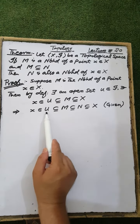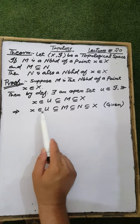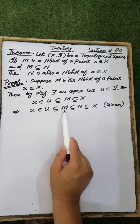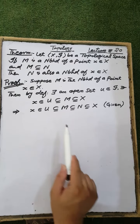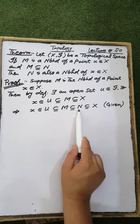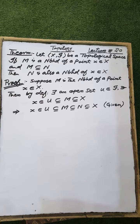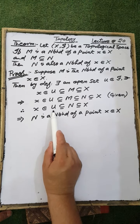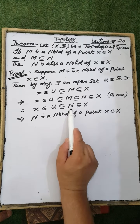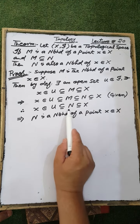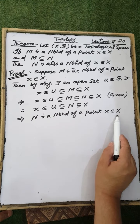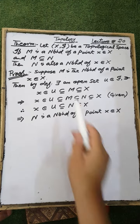This implies that X is contained in the open set U, and U is a subset of M. The open set U is a subset of M, and M is a subset of N according to the hypothesis, where both M and N are subsets of the ground set X. Hence, X belongs to the open set U, and U is a subset of N, which is a subset of the ground set X. Therefore, N is a neighborhood of the point X of the ground set X, which is our required result.